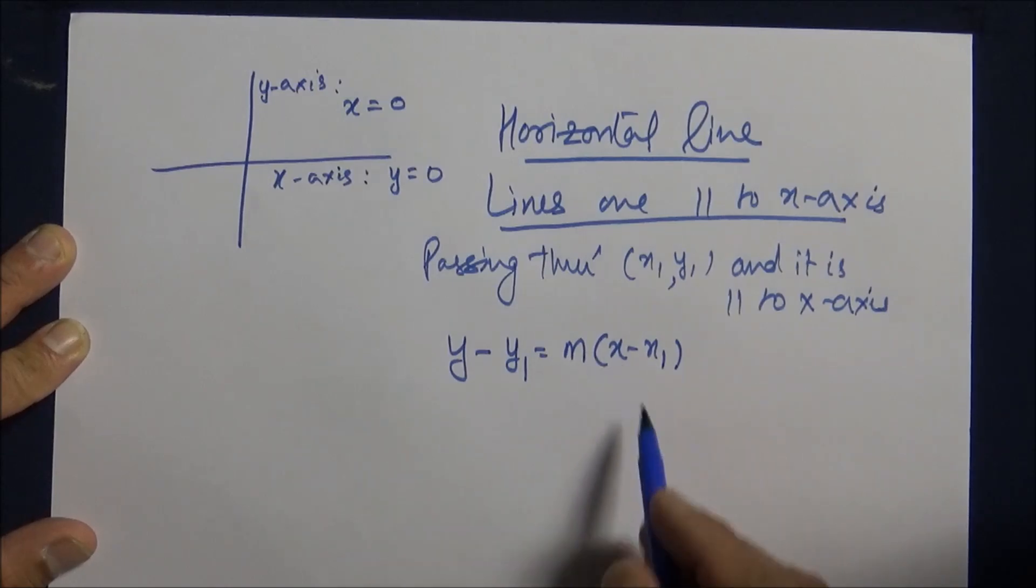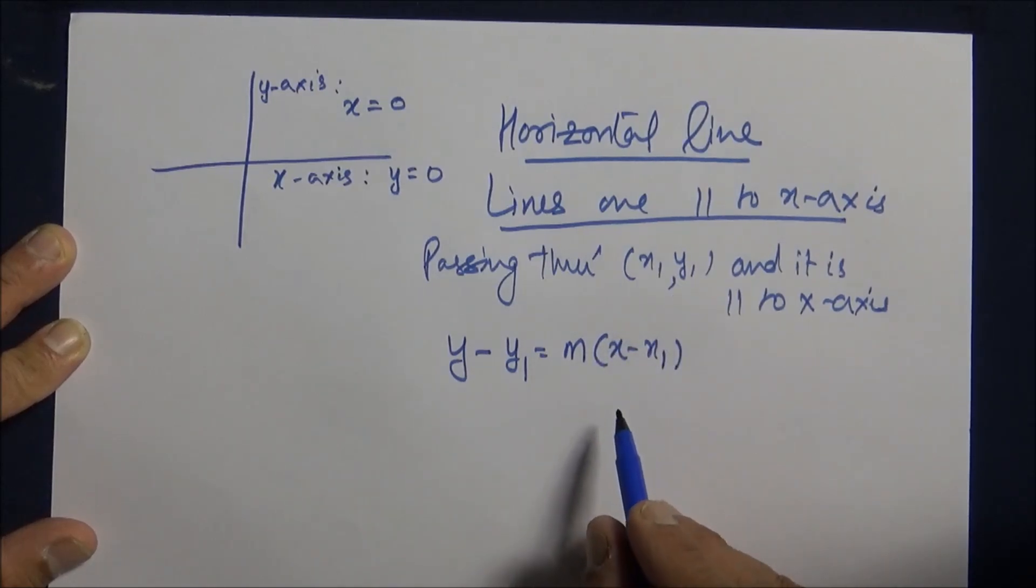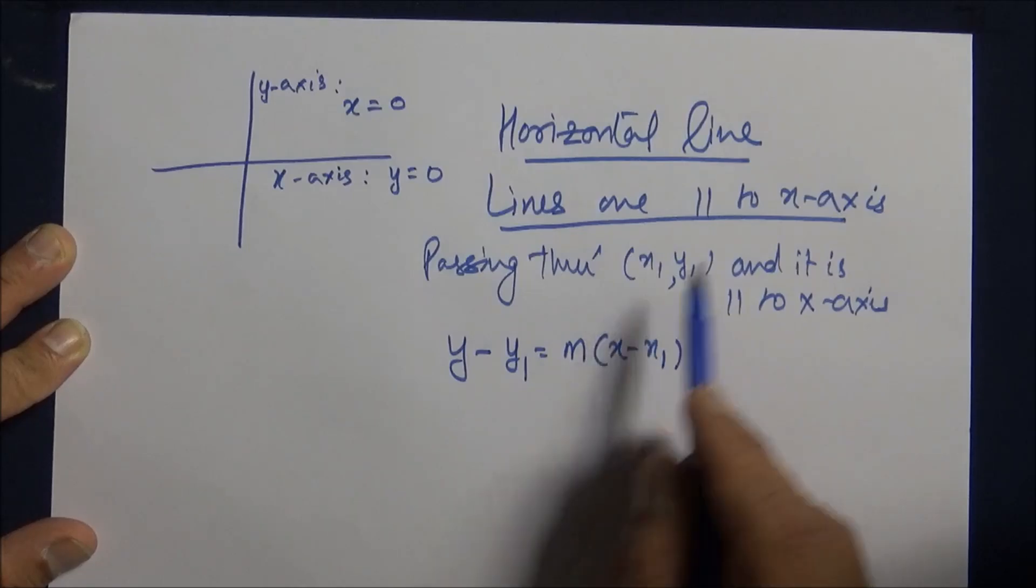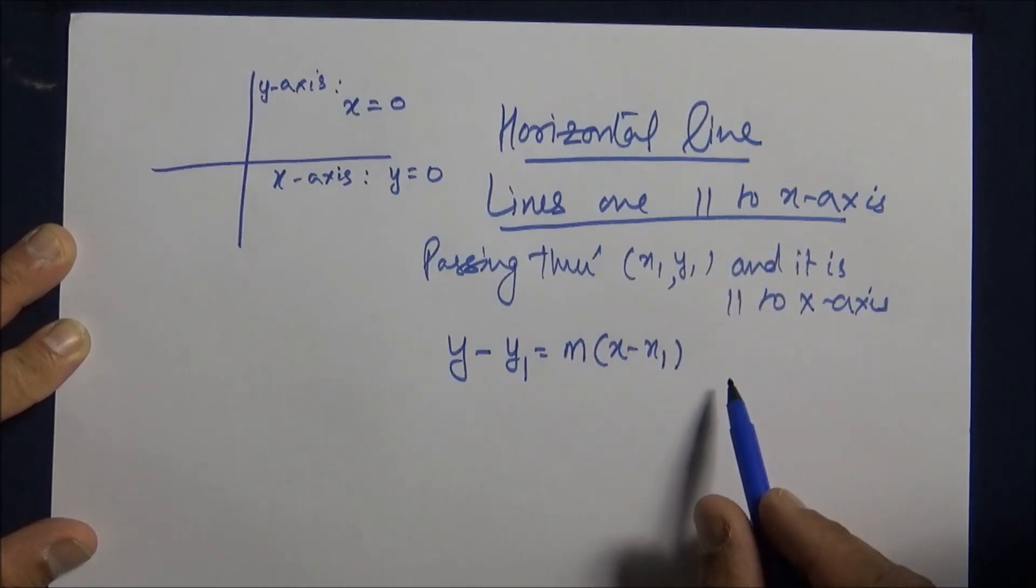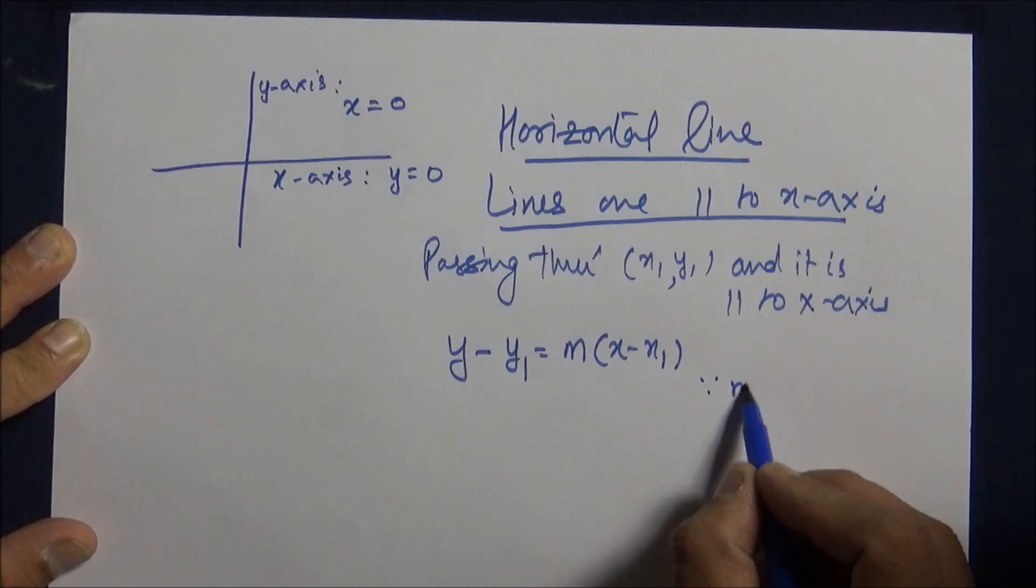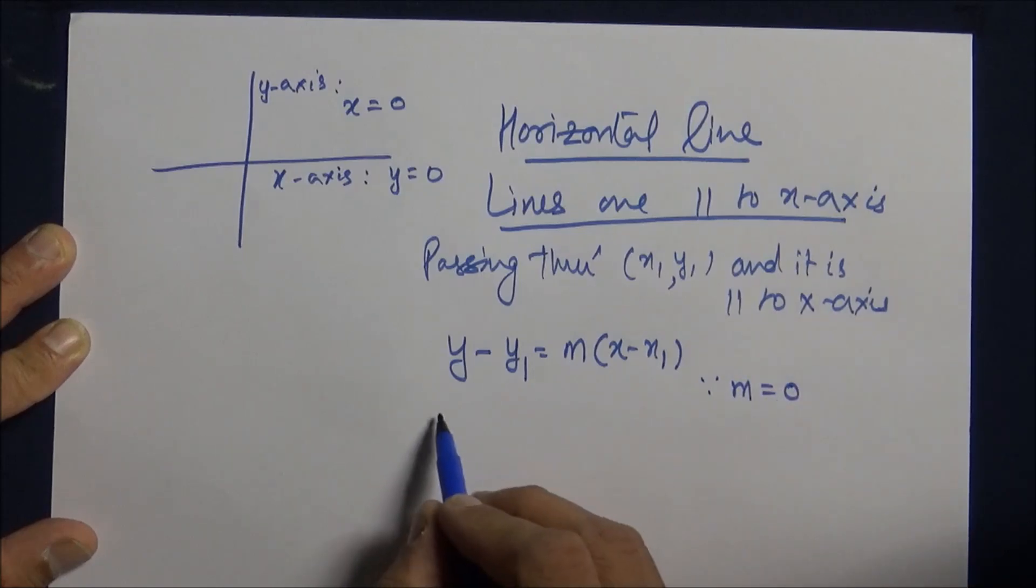But what is m? Since both the lines are parallel, that is this line is parallel to the x-axis, the slopes will be equal. Therefore, the slope of this line will be 0. And hence, the equation will turn to y minus y1 is equal to 0.